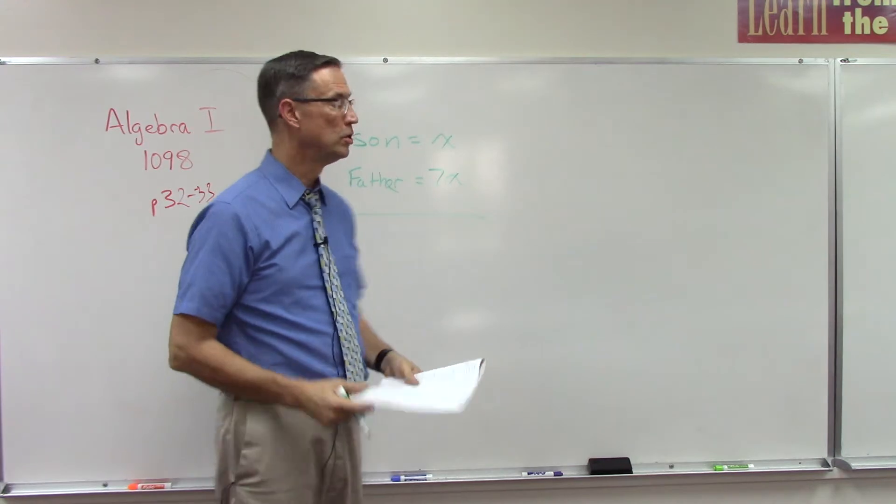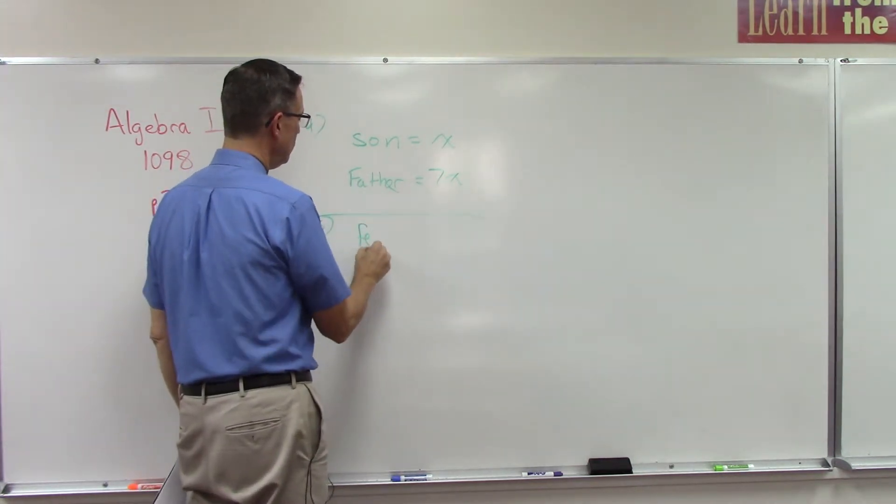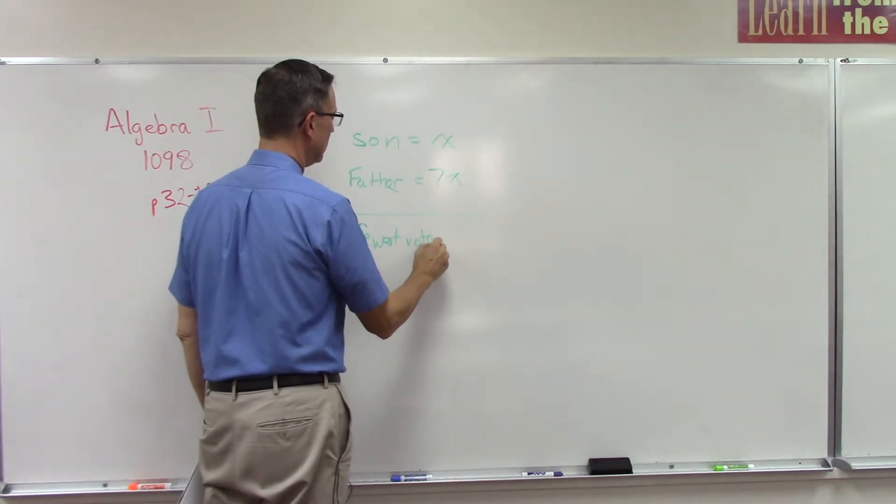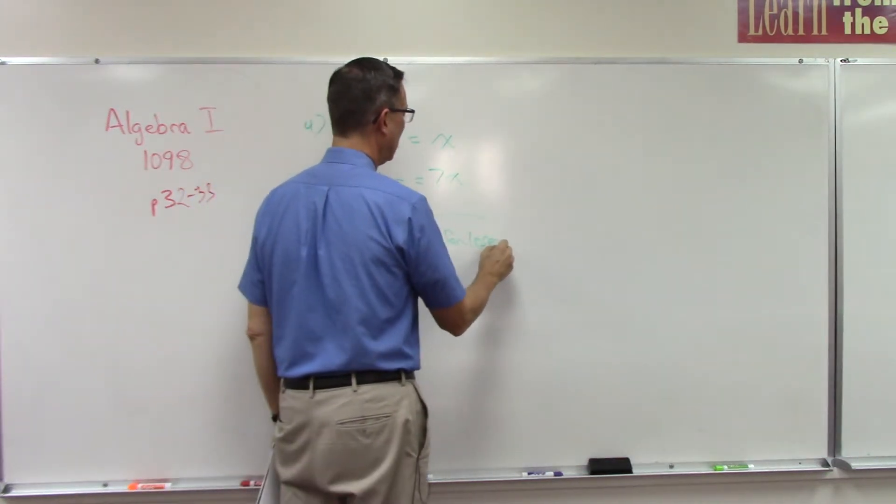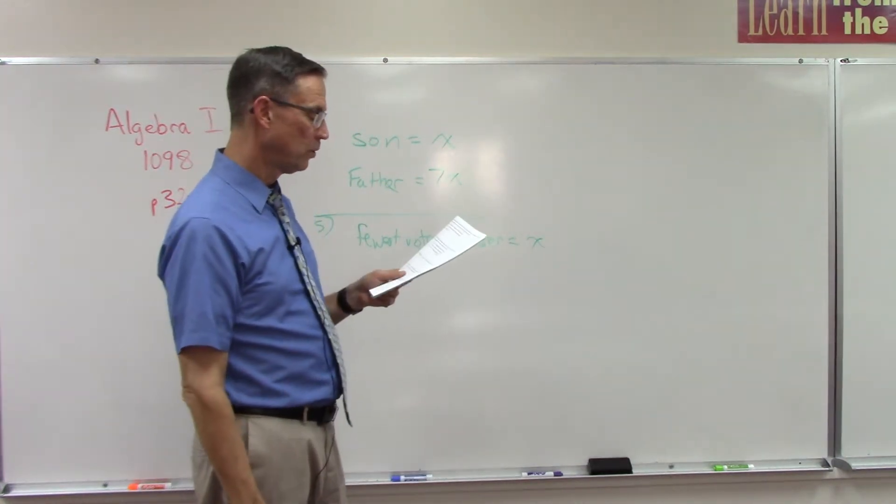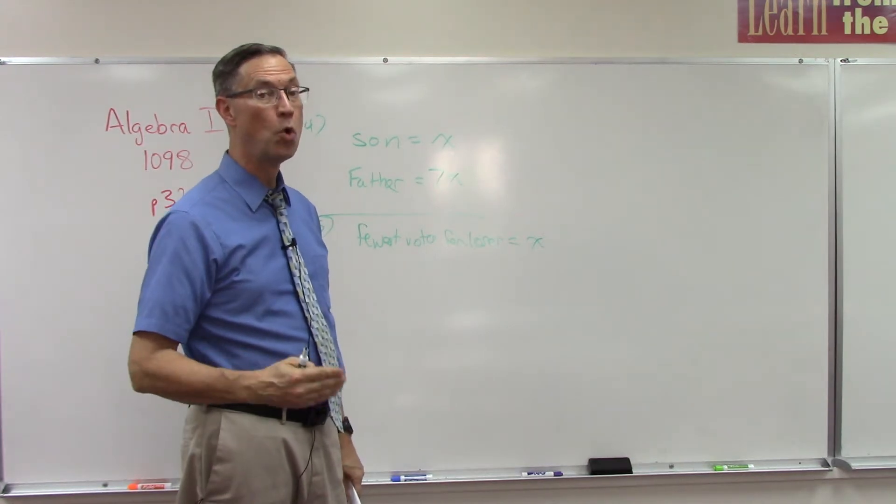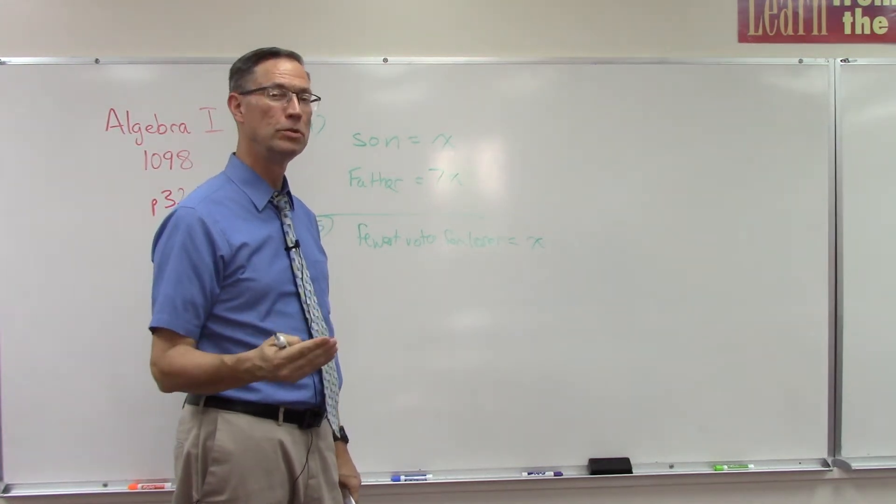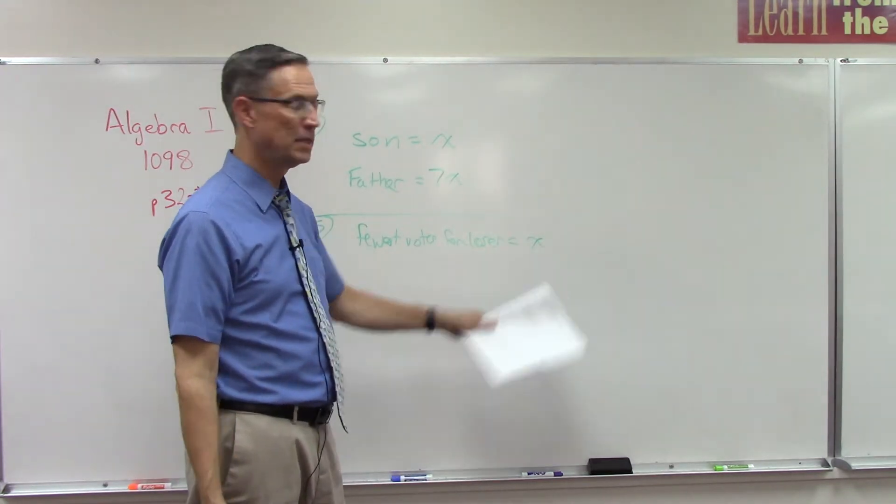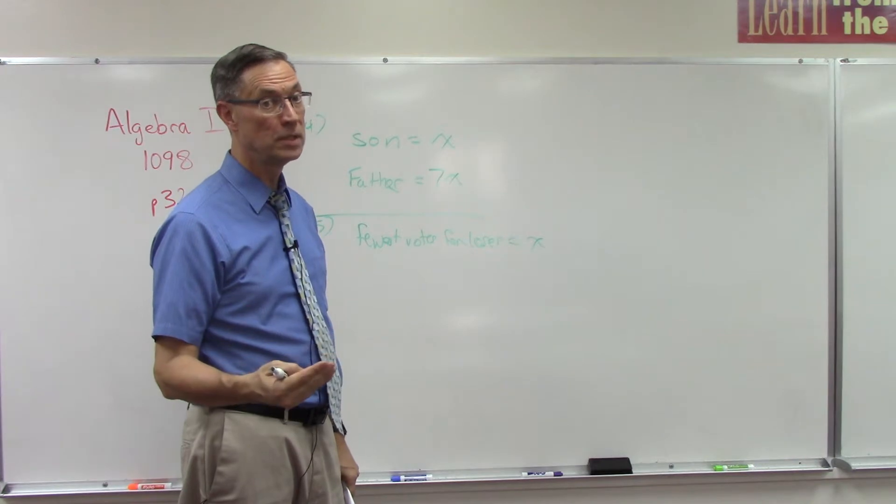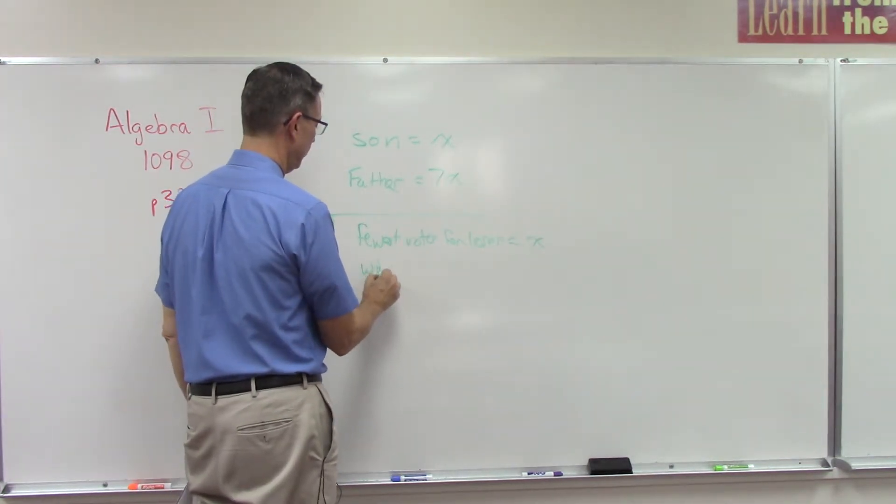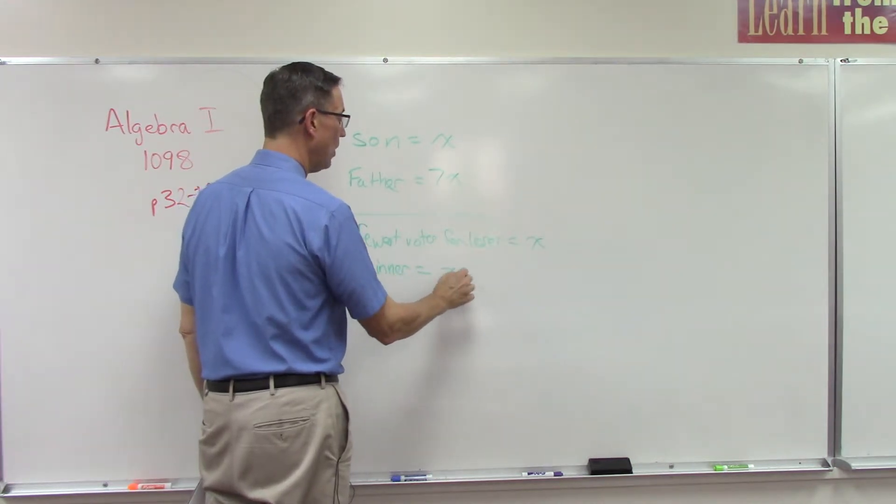Let's let the loser get x number of votes. But the winner had how many more votes than the loser? Always think of the lesser one first. The lesser one we don't know - that's x. But we know that the winner had 160 votes more than the loser, so x plus 160.